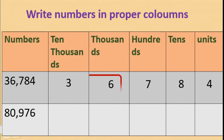Three will come in ten thousands place because it is 30,000. Now while writing, what we do? We add these two together. How do we write? Thirty-six thousand — we take them together. That is thirty-six thousand seven hundred eighty-four. Together we take because that is the thousands and ten thousands place, so while reading we take them together as thirty-six thousand.